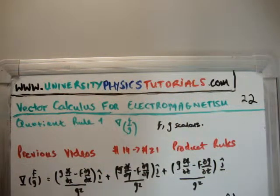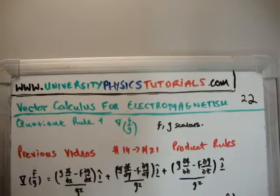The previous videos to this are 14 through 21, where I discuss the product rules. I suppose you don't need to have done the product rules to understand the quotient rules, but the product rules are probably more important for electromagnetism.